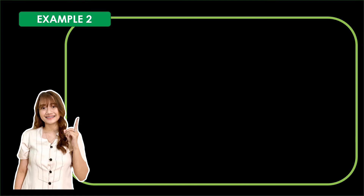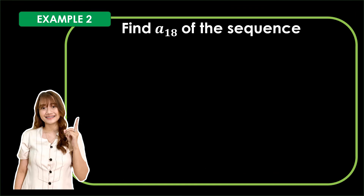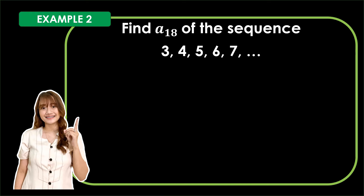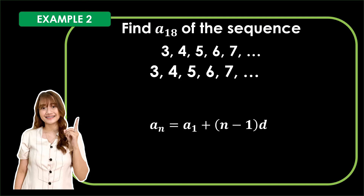Now let us have Example 2. Find a sub 18 of the sequence 3, 4, 5, 6, 7, and so on. To answer this problem, the given sequence is 3, 4, 5, 6, 7, and so on. We need to use the arithmetic sequence formula: a sub n is equal to a sub 1 plus the quantity n minus 1 times d. We need to determine the first term, the term's location, and the common difference.